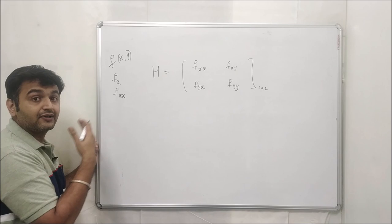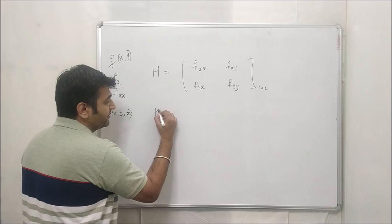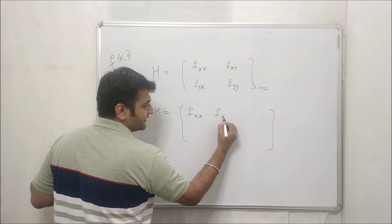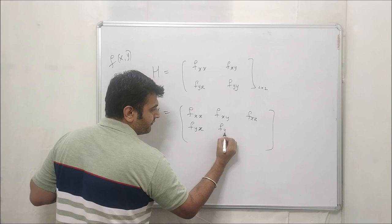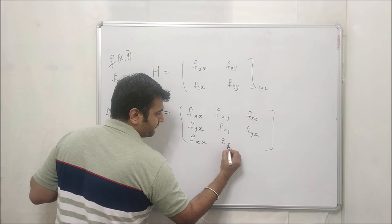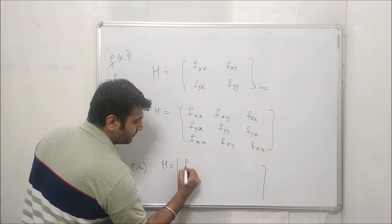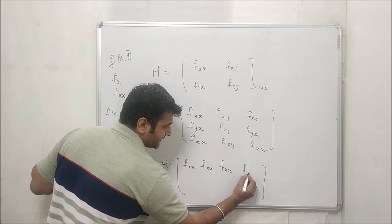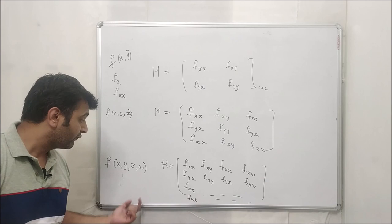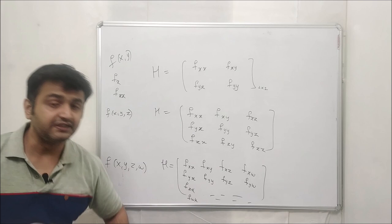If you have a function from ℝ³ to ℝ, the Hessian is a 3×3 matrix: [f_xx, f_xy, f_xz; f_yx, f_yy, f_yz; f_zx, f_zy, f_zz]. For a function from ℝ⁴ to ℝ, the first row would be f_xx, f_xy, f_xz, f_xw, and similarly completed. For ℝ⁵ to ℝ it's a 5×5 matrix, and so on — the Hessian generalizes naturally.